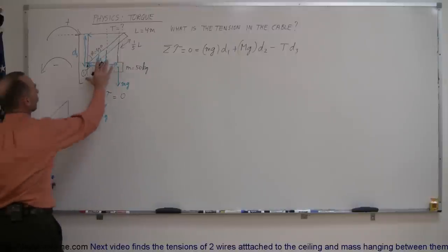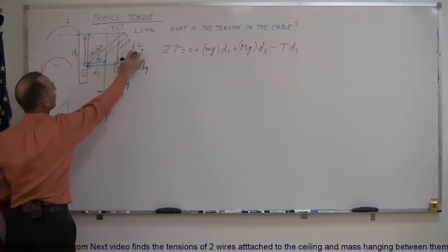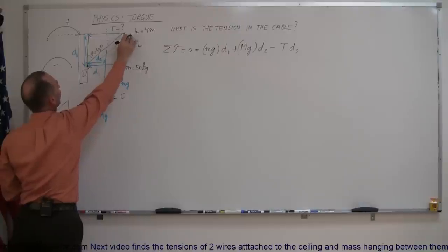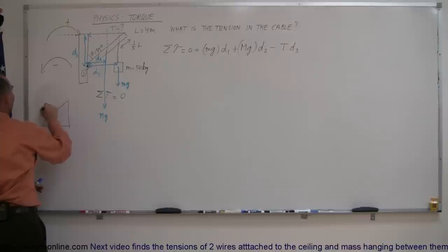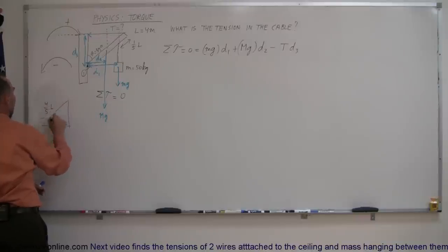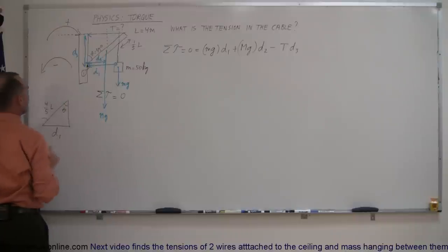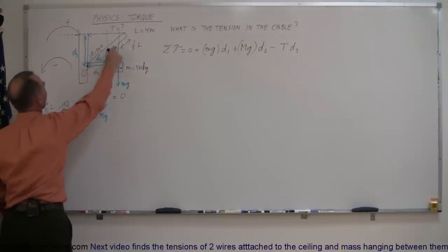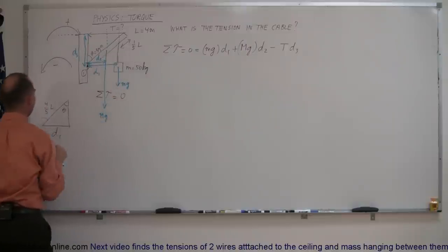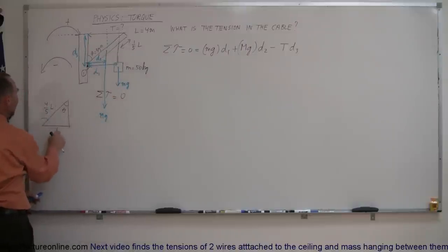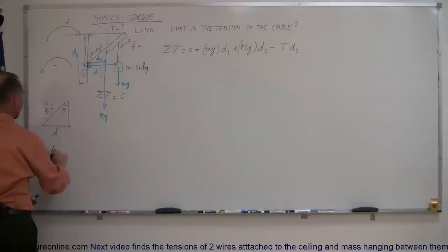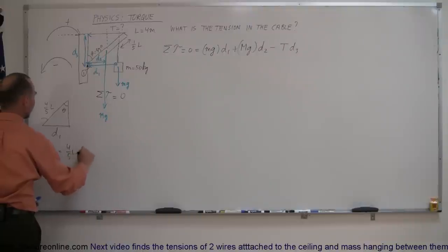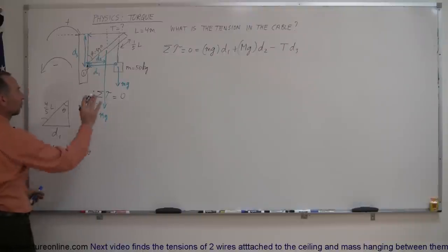This length right here is four-fifths the length of the beam, because if I attach this at one-fifth from the end of the beam, this portion is four-fifths L. This angle theta — if it's 45 degrees — equals this angle theta here by alternate interior angles. Since d1 is opposite the angle theta, d1 equals the hypotenuse four-fifths L times the sine of theta.